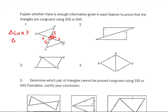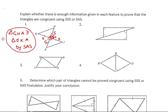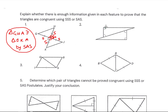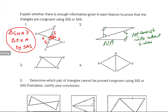Looking at number two, we have a right triangle, so we're looking at possibly hypotenuse-leg. But we have an angle there, so that angle and the right angle gives us two angles. I'm not sure there's enough information about the sides — they look congruent, but there's not enough information for us to actually know for sure.